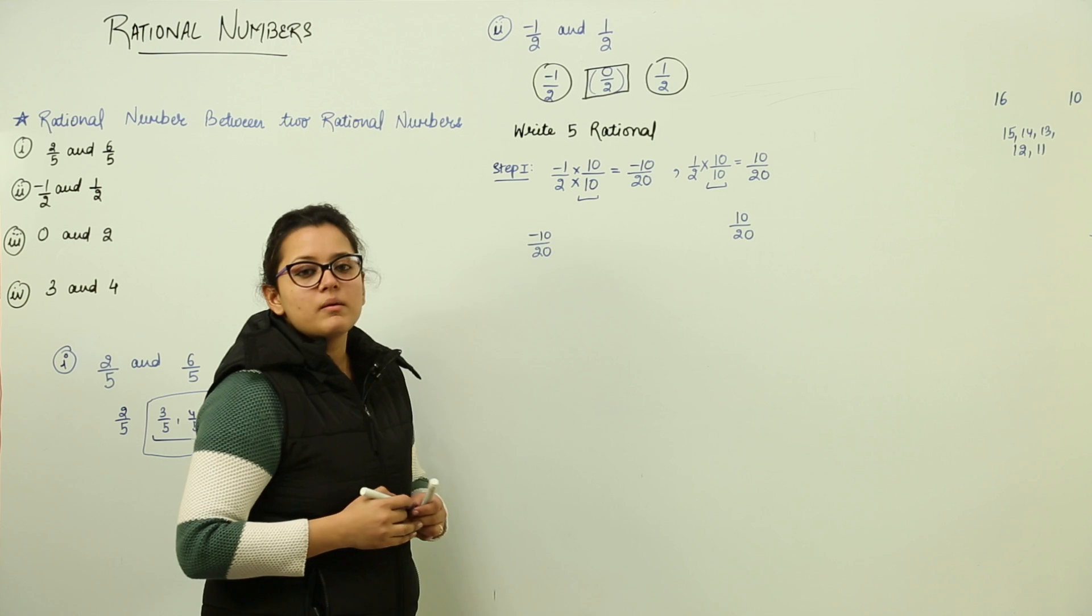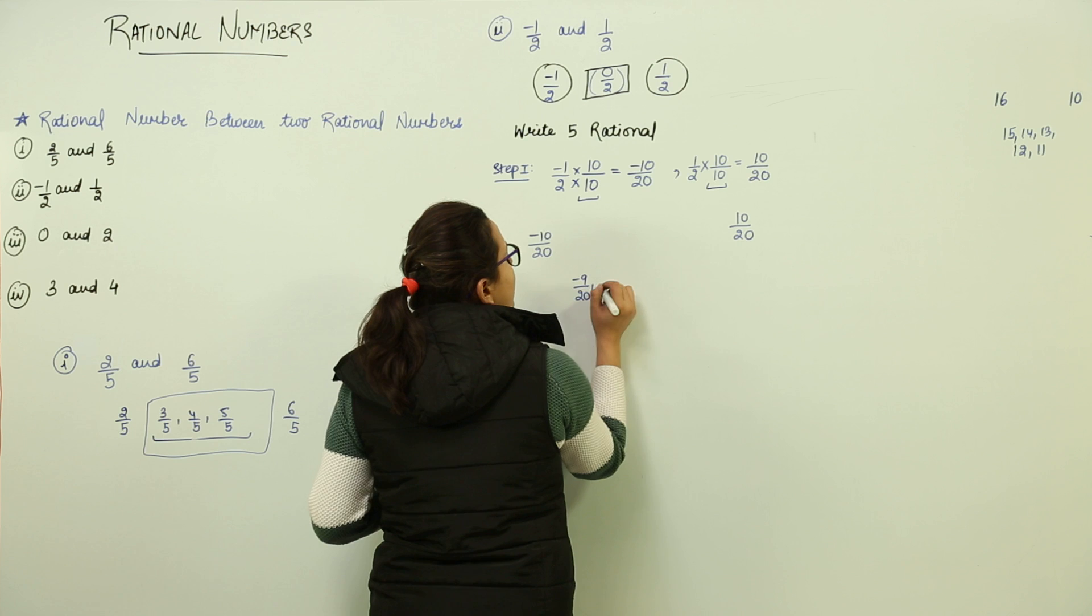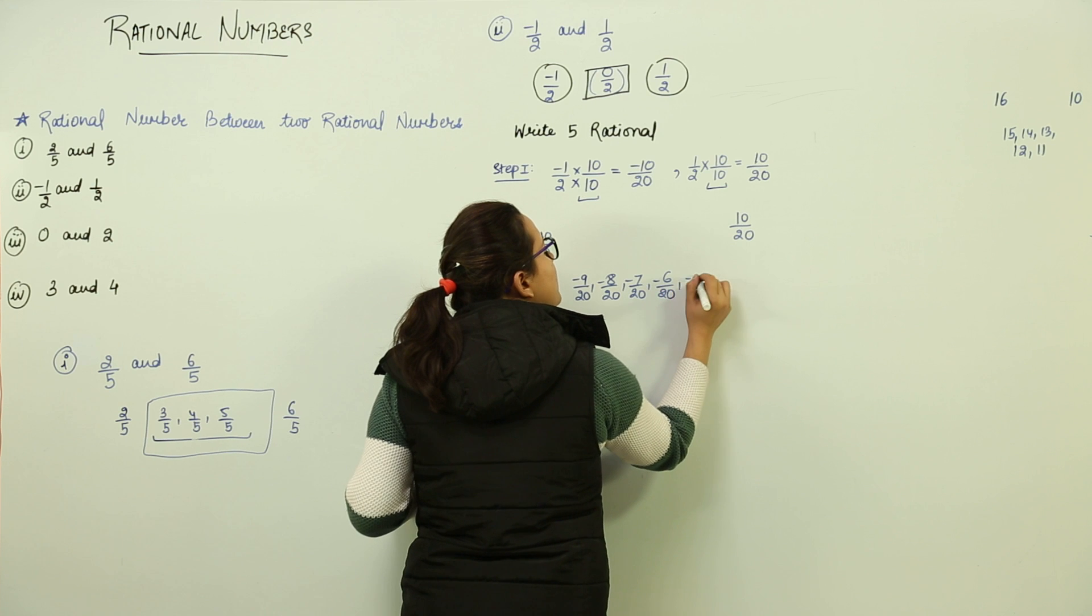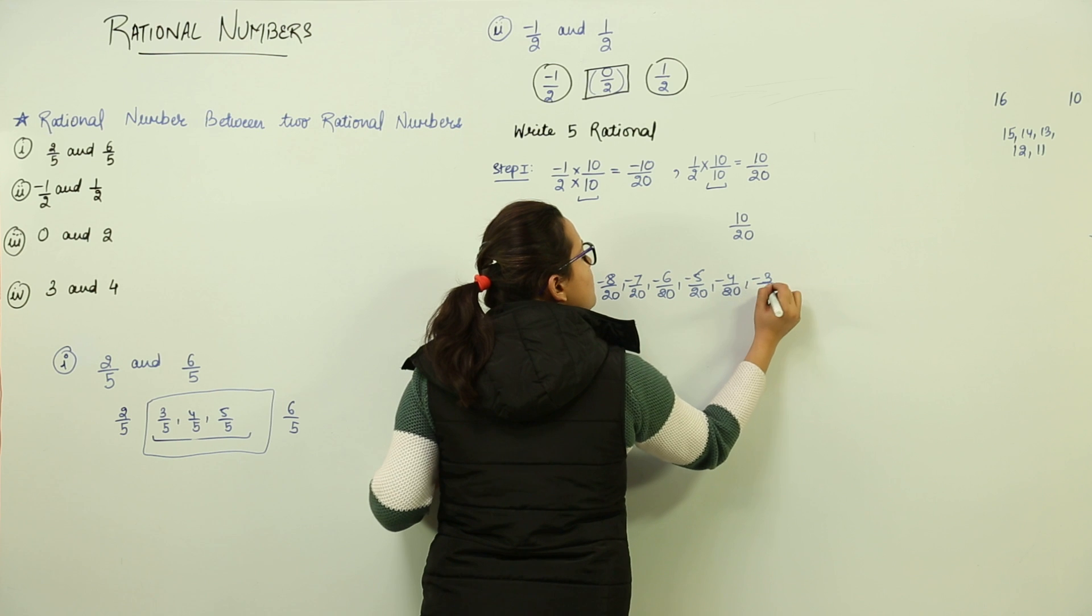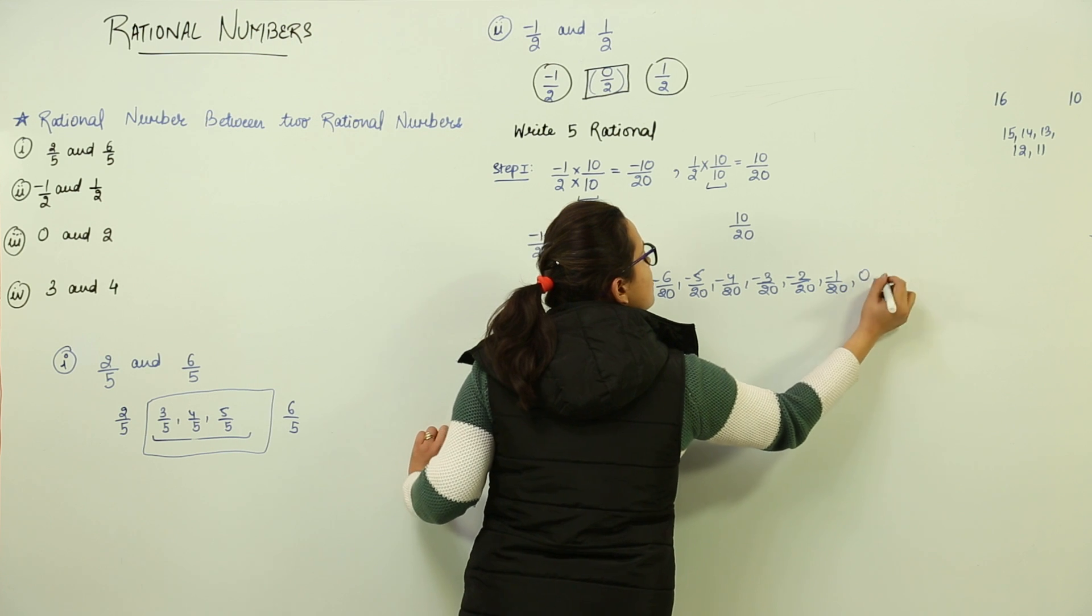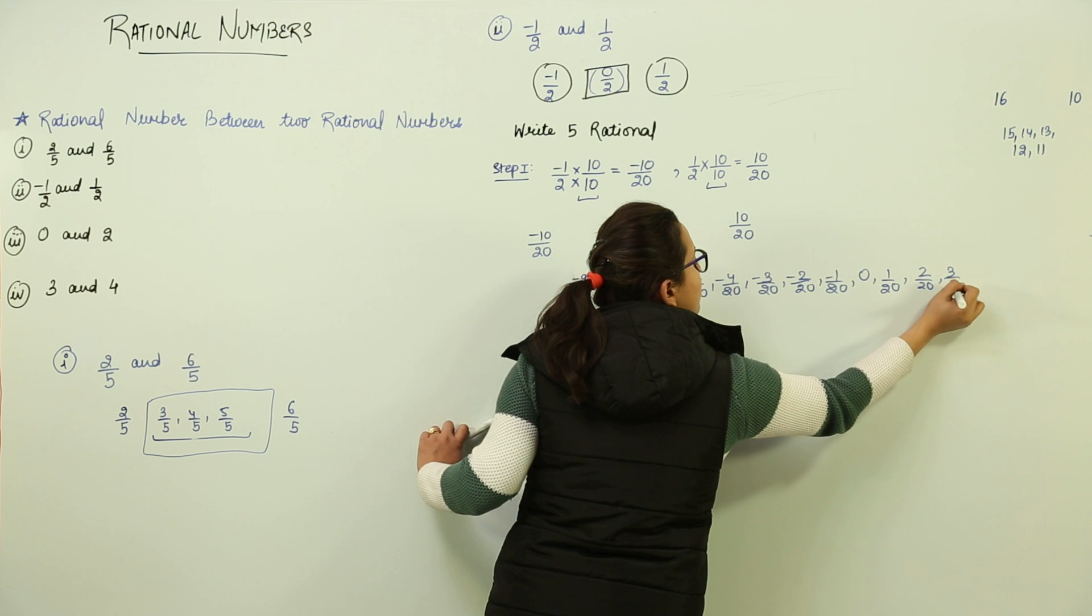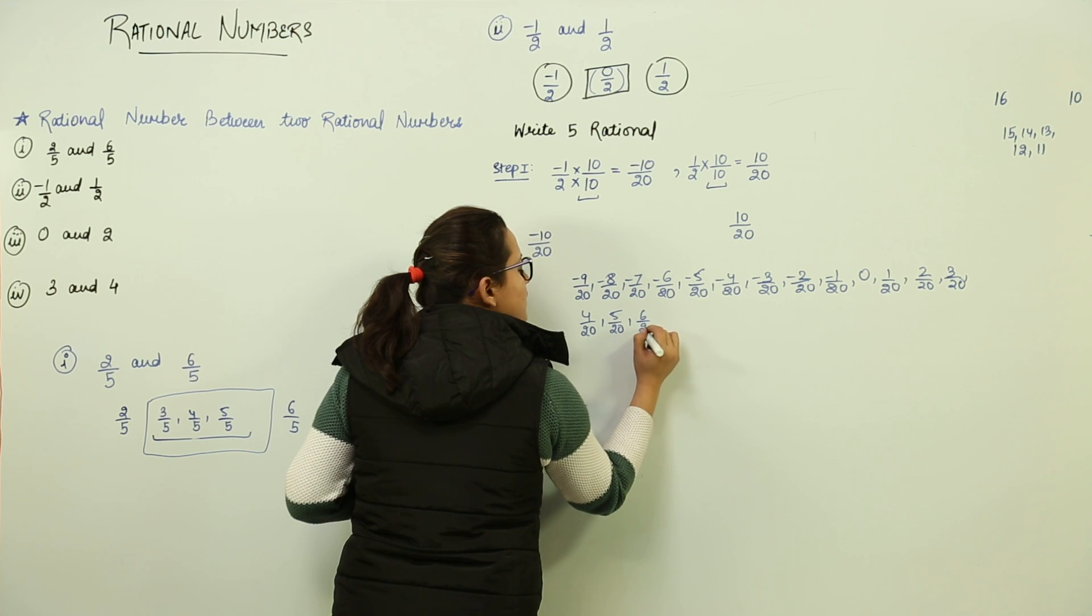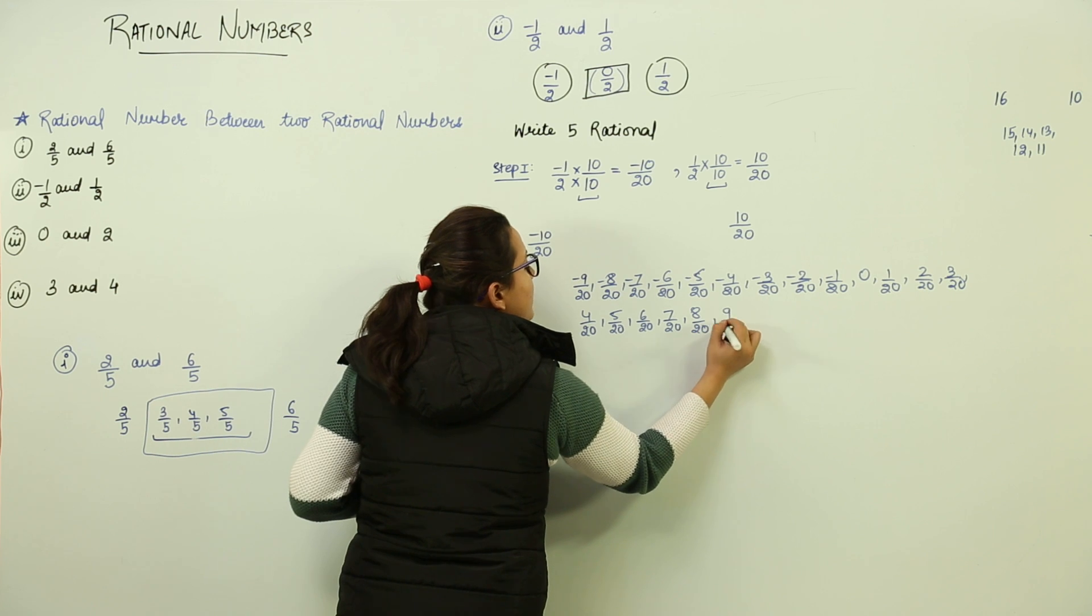How many numbers do we have in between them? We can write them: minus 9 by 20, minus 8 by 20, minus 7 by 20, minus 6 by 20, minus 5 upon 20, minus 4 upon 20, minus 3 upon 20, minus 2 upon 20, minus 1 upon 20, 0, 1 by 20, 2 by 20, 3 by 20, 4 by 20, 5 by 20, 6 by 20, 7 by 20, 8 by 20, 9 by 20.